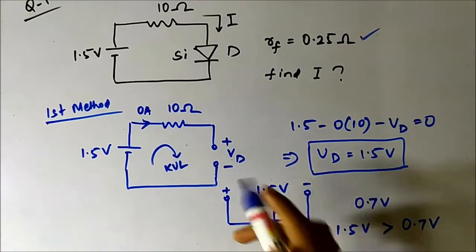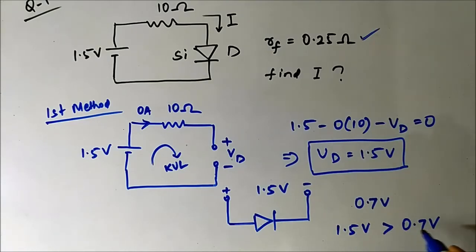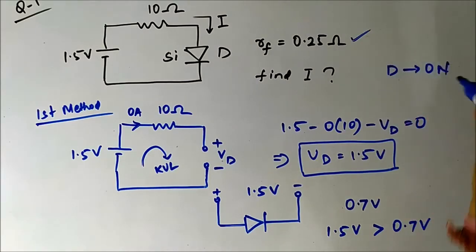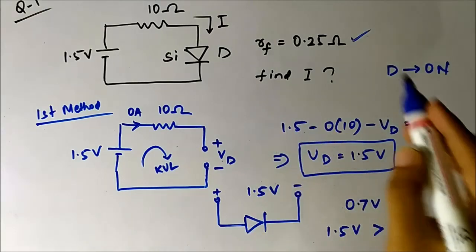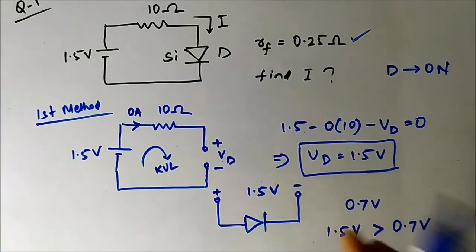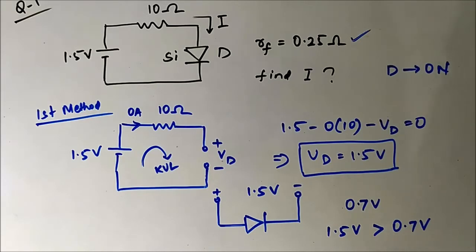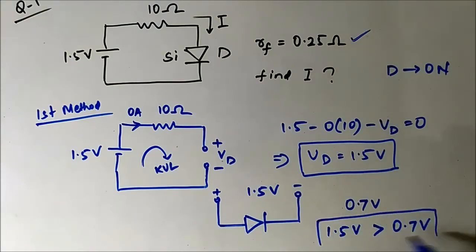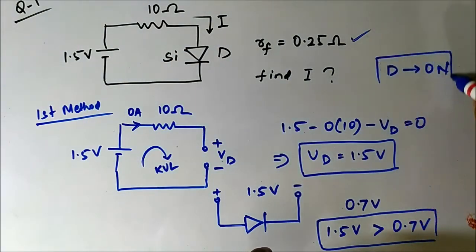The voltage across the diode is 1.5 volt, and the barrier potential for a silicon diode is 0.7 volt. Since 1.5 volt is greater than 0.7 volt, it crosses the forward barrier potential — the voltage is sufficiently higher. Therefore the diode is on, and we can replace it with its equivalent built-in potential and resistance. This completes the first method.